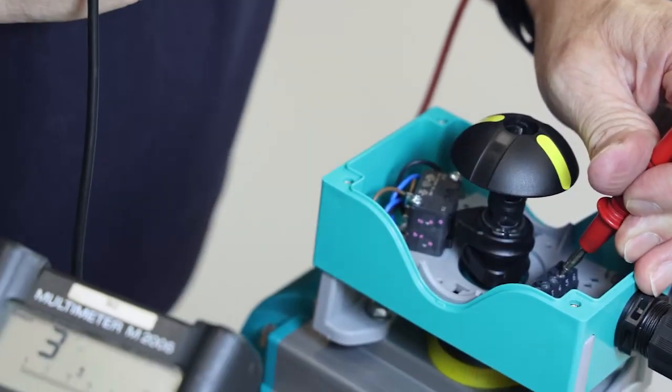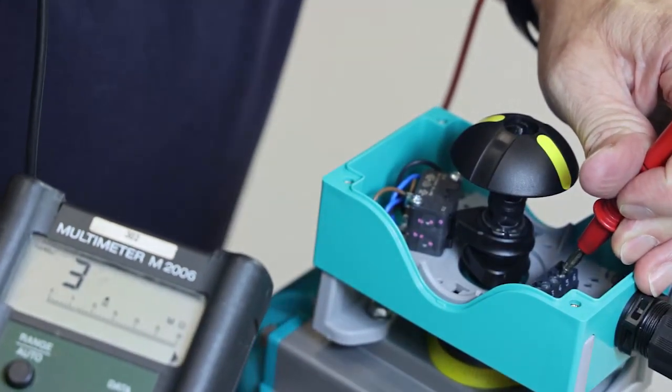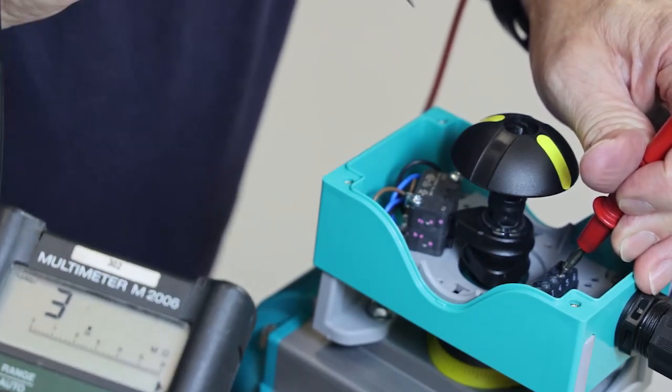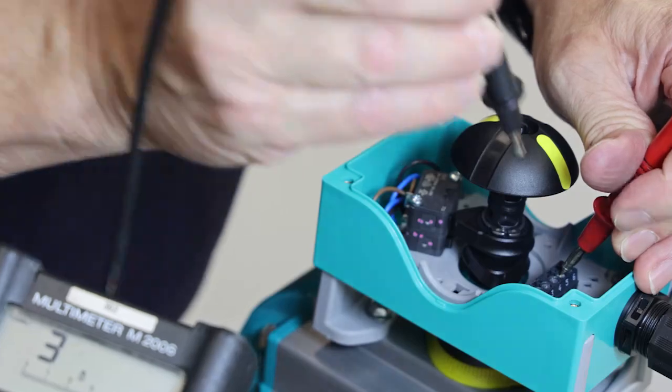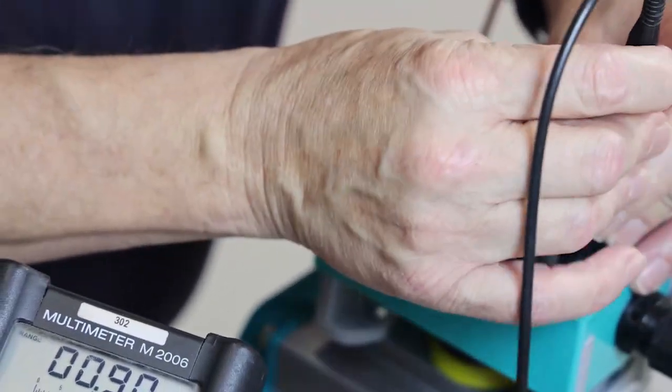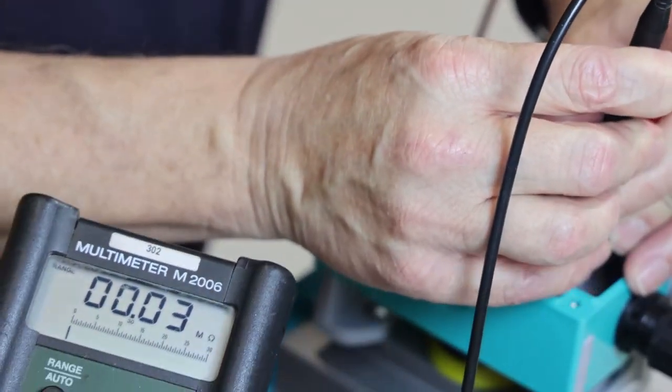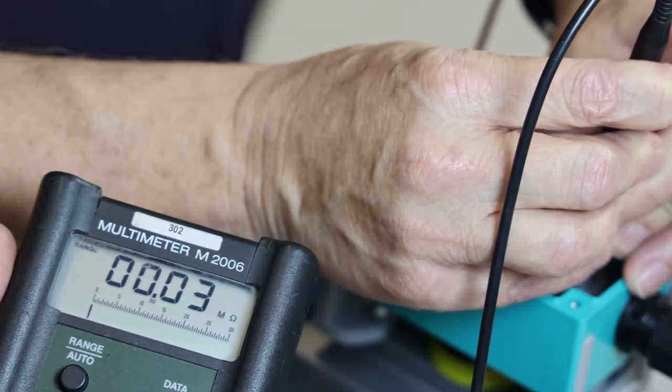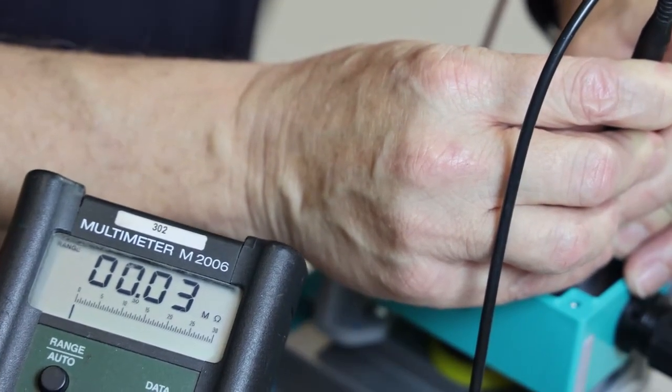The valve is now open. We check with terminals four and five if the cam is properly set. As we see on the multimeter, we have no resistance, so we can say the valve is properly set.